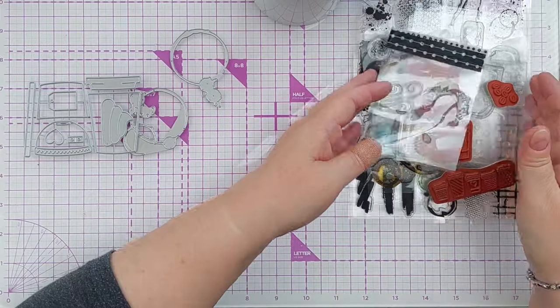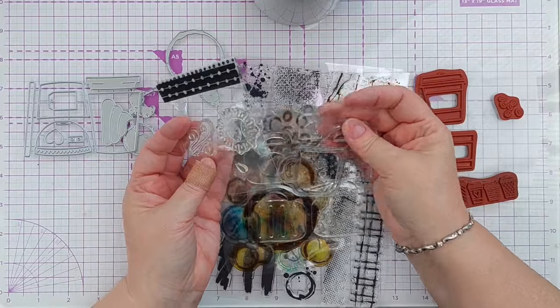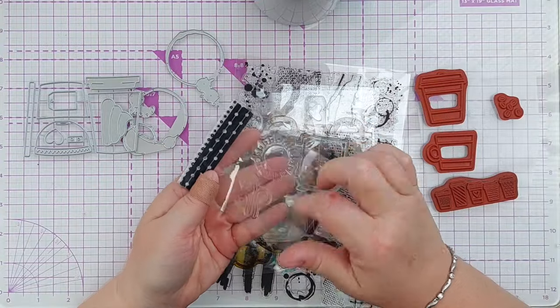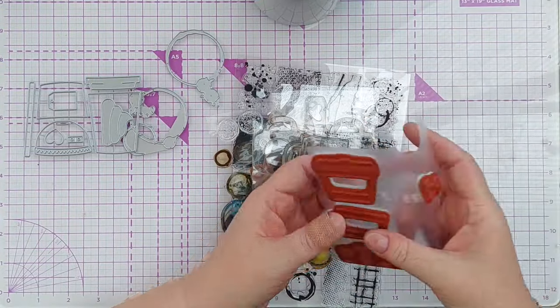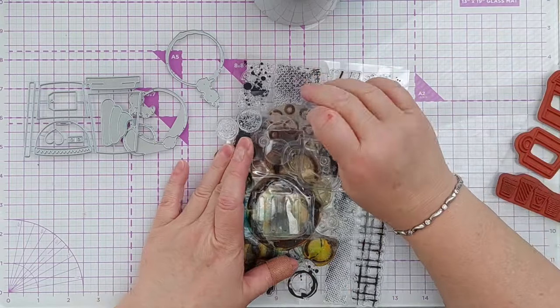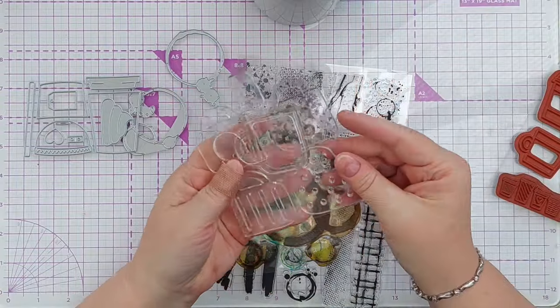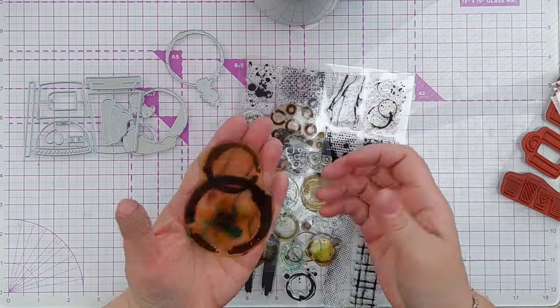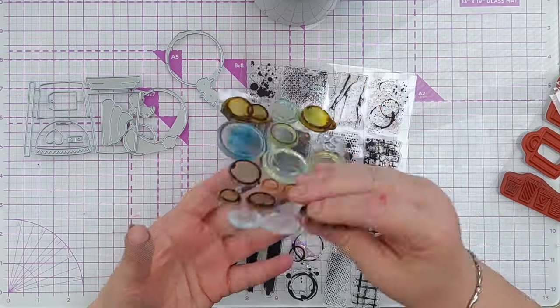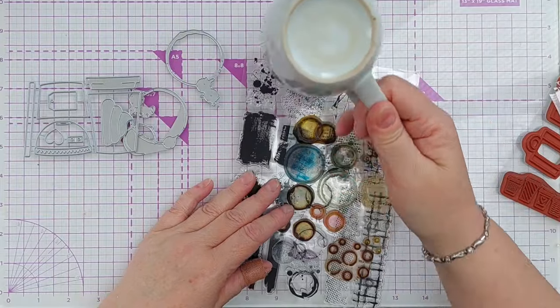And I've got all my coffee and tea themed stamps out. I've got a steamy swirl, some with coffee beans that I might use, these mugs, there's a whole set of them, some coffee ring stamps and some more little ring stamps. So I've also got a coffee cup.